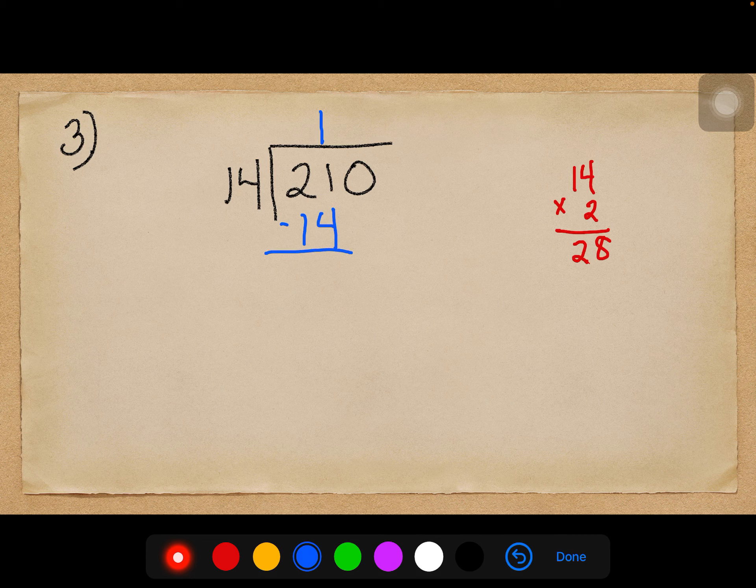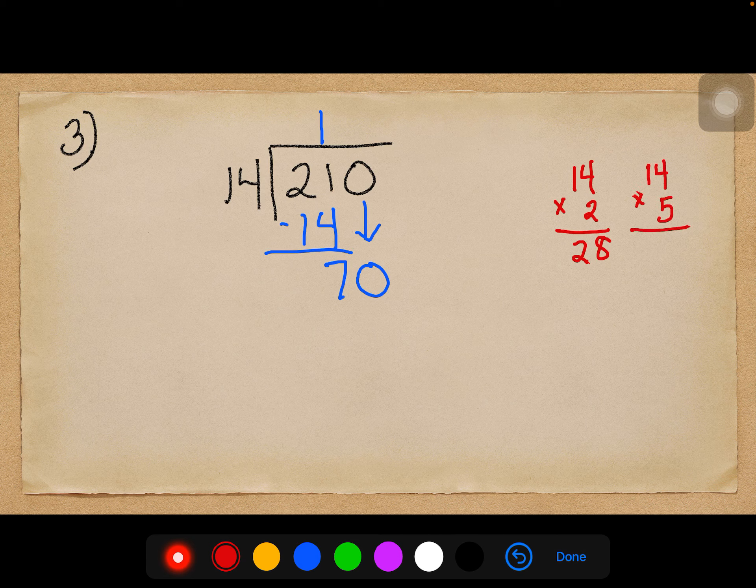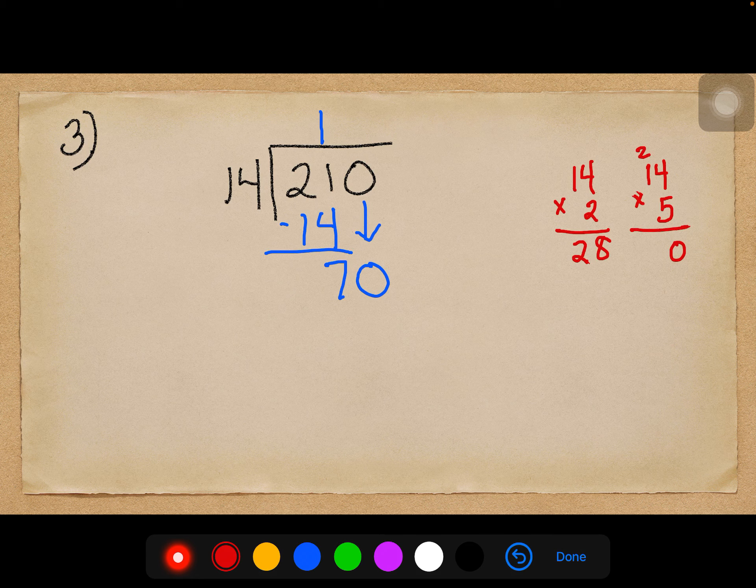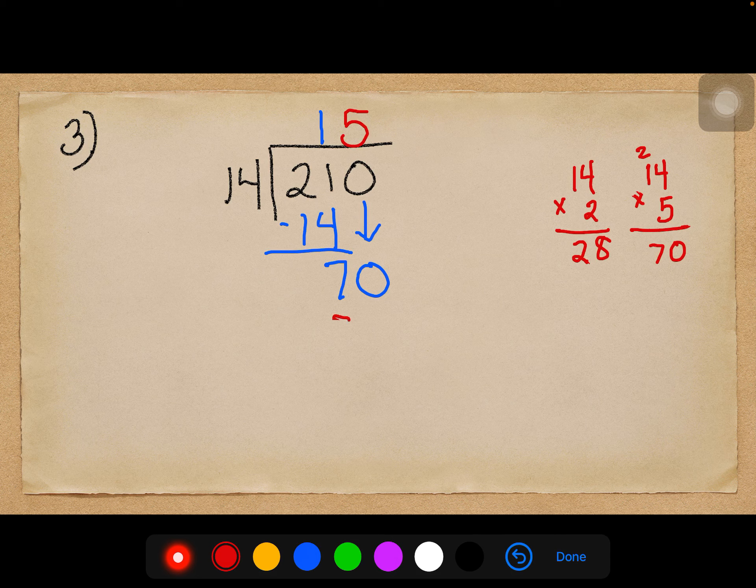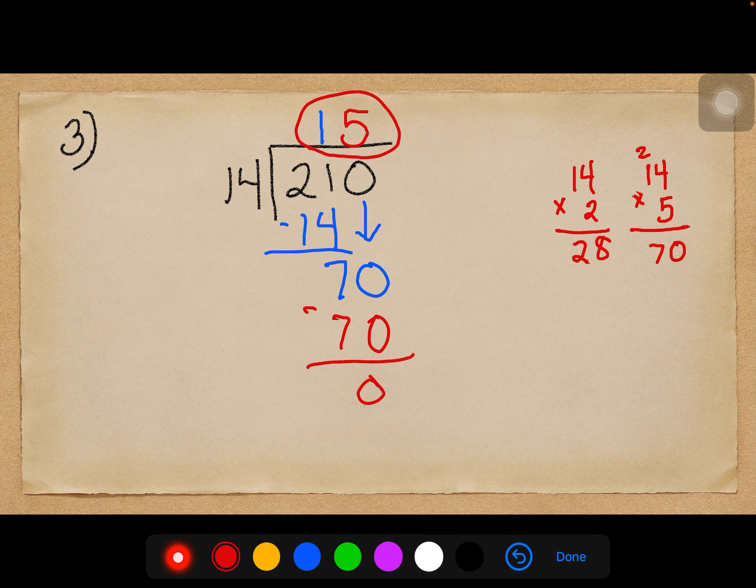The difference, I'm going to start with 14 in my head and count up to 21. 14, 15, 16, 17, 18, 19, 20, 21. The difference is 7. And now I have to bring down the 0, and I'm going to start all over and ask myself how many 14's are in 70. Again, I don't know for sure, but I'm going to jump and go 14 times 5, oh, exactly, 70. So I put a 5 up here, 5 times 14 is 70, the difference is 0, and my answer is 15.